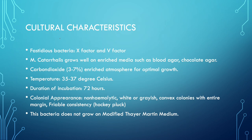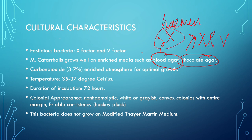Now let's come towards the cultural characteristics. Moraxella catarrhalis is a fastidious bacteria that requires X and V factors. That's why it grows on enriched mediums such as blood agar and chocolate agar. The X factor is hemin and the V factor is biotin. The environment should have 3 to 7 percent carbon dioxide enriched atmosphere for optimal growth. The temperature should be 35 to 37 degrees Celsius, and the duration of incubation is 72 hours.